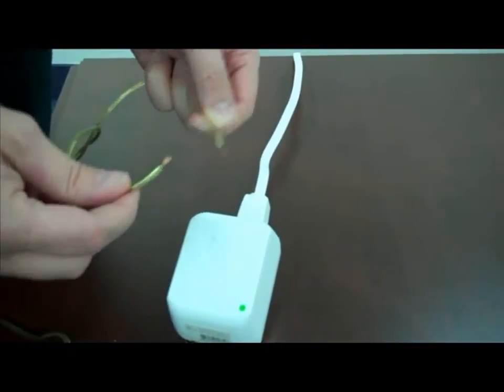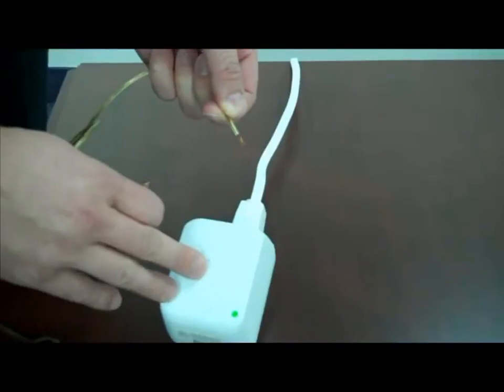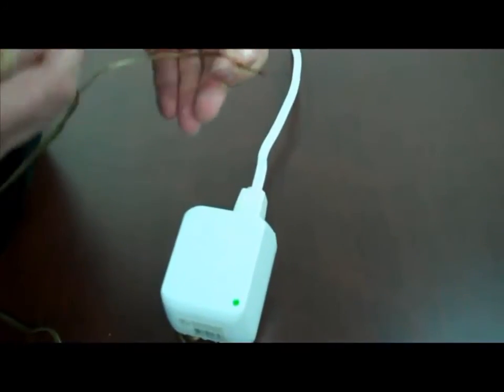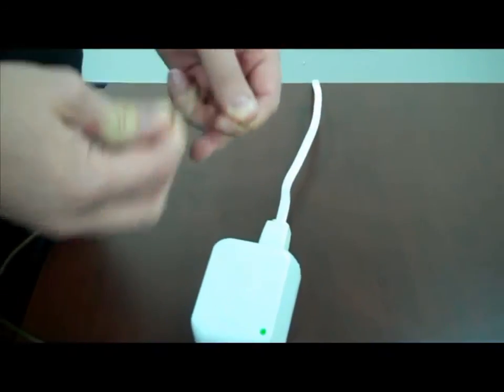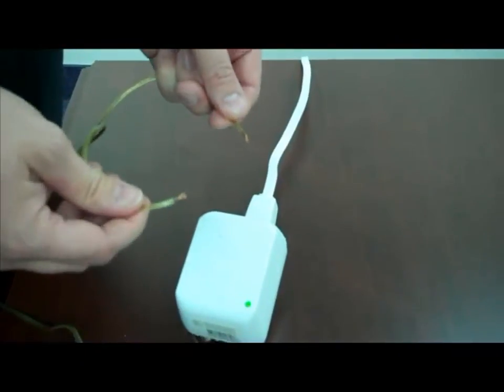The green light immediately comes back on, so we have power again. We didn't blow the fuse out. The PTC opened up, and once it cooled off, it made contact and the transformer is able to continue to output power.